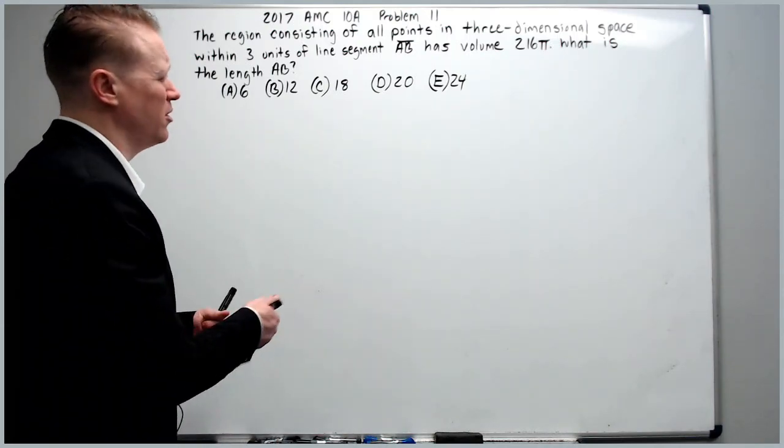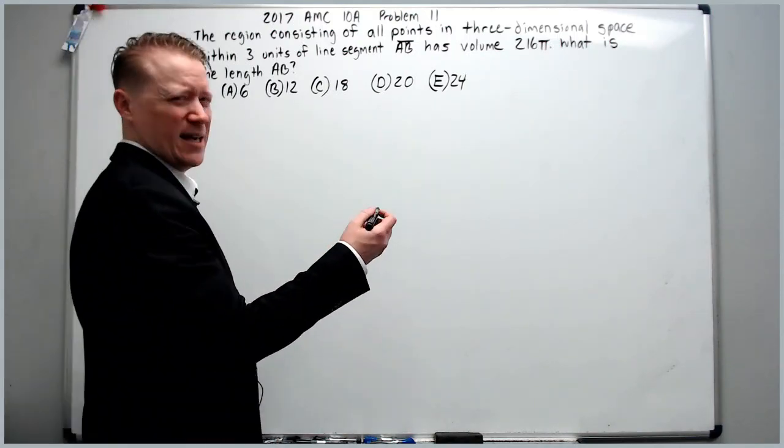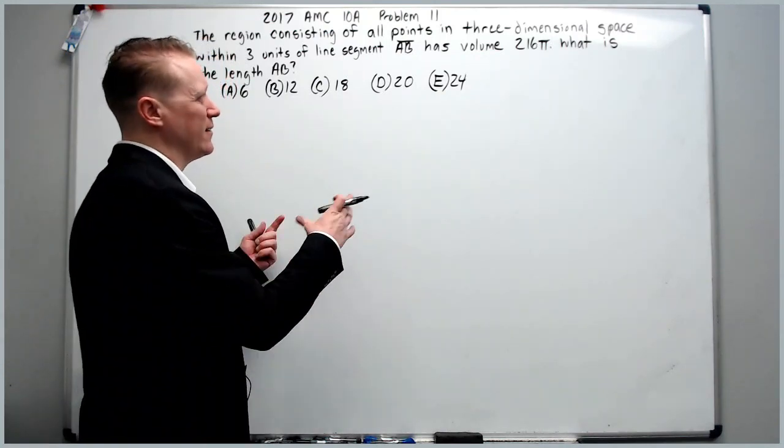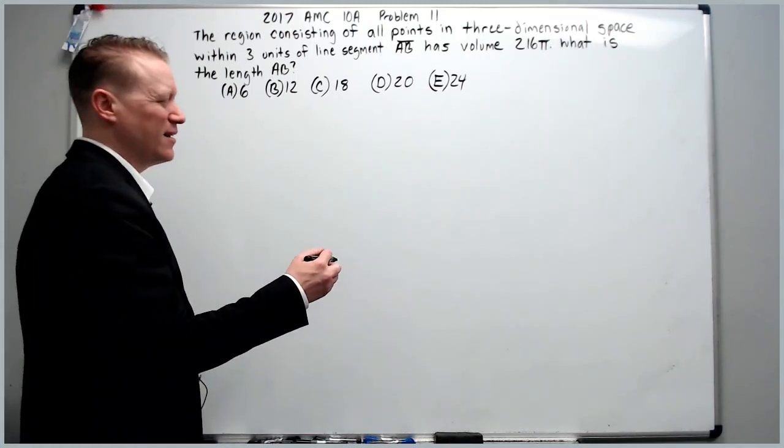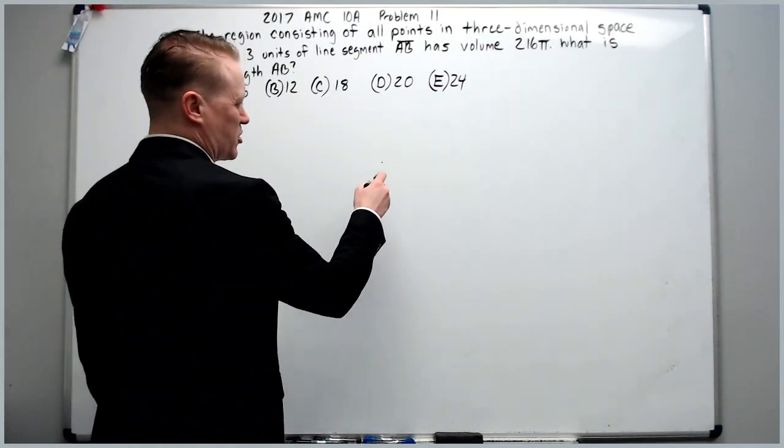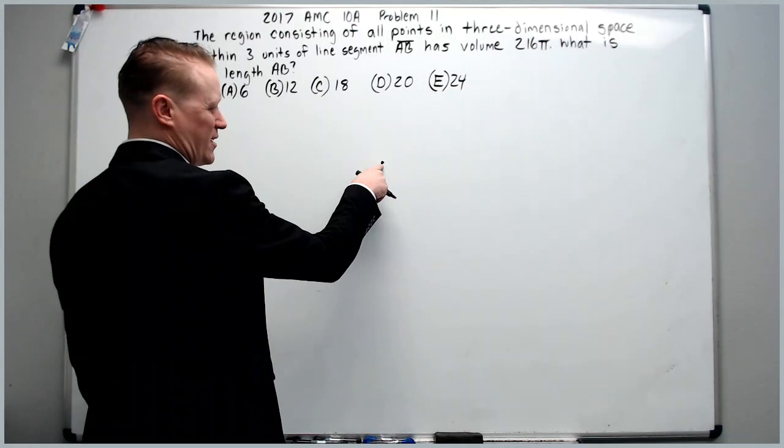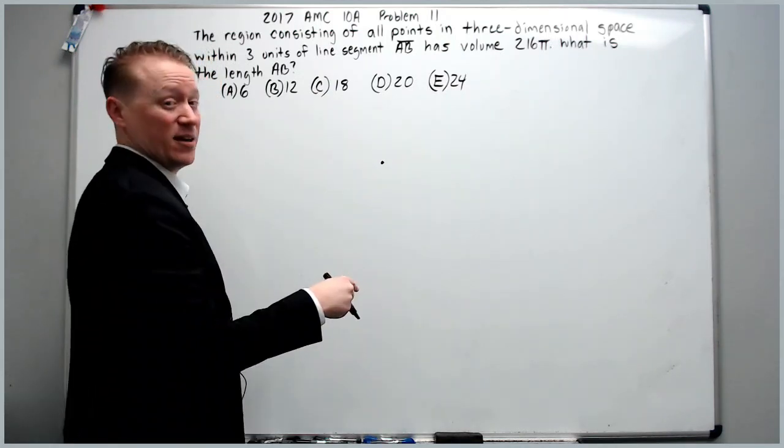So how are we going to visualize this? It's kind of hard to draw something 3D with all points within three units. Let's think about a line going straight back into the board, of which this is like you're looking straight down into it.